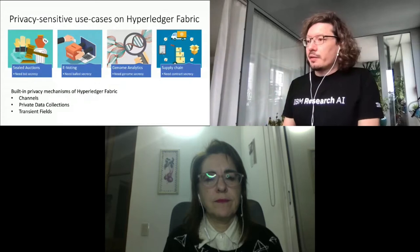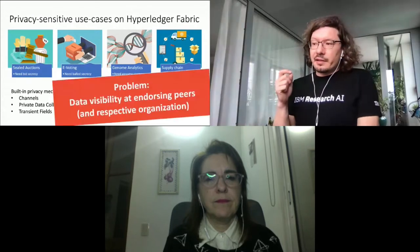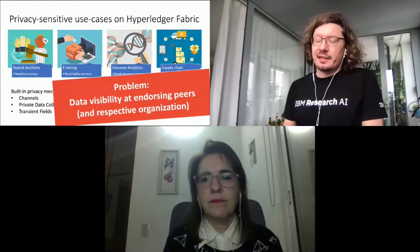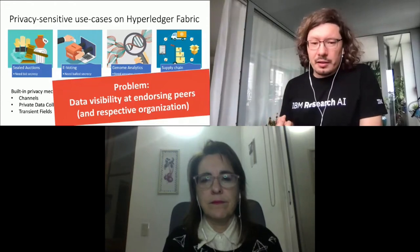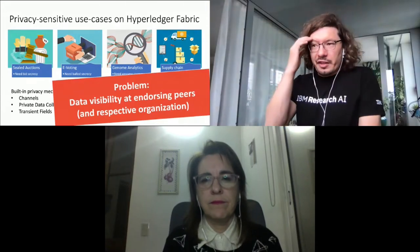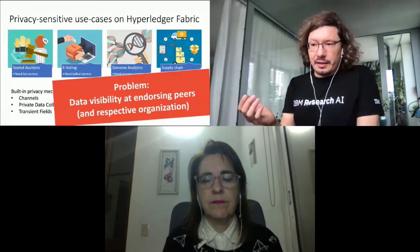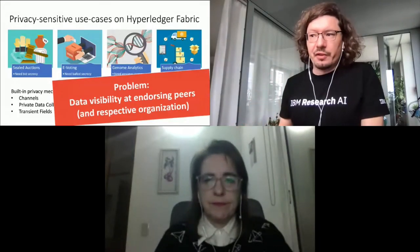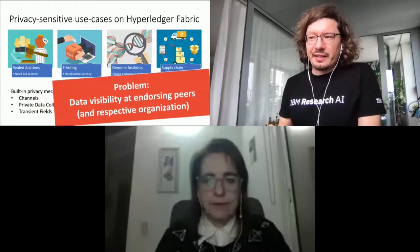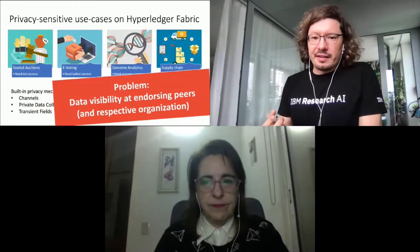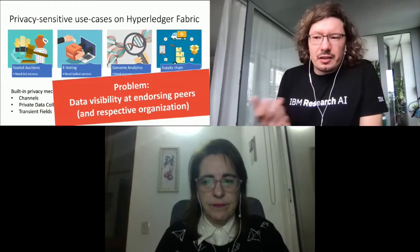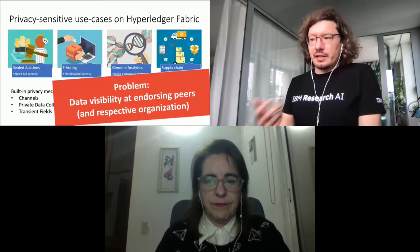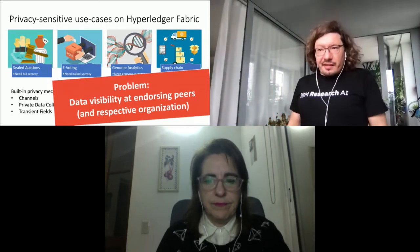However, there is a problem: the data visibility at the endorsing peers. If we think about the voting example again, if the government would run an endorsing peer for such a voting system, they would have access to all the ballots, even if they are encrypted in some form, because if they want to process them, they need to decrypt them.